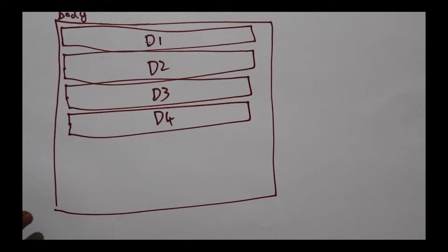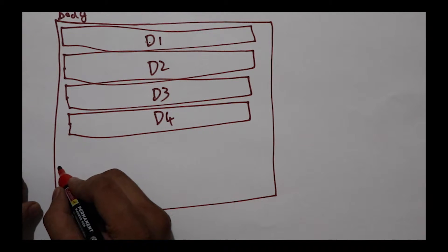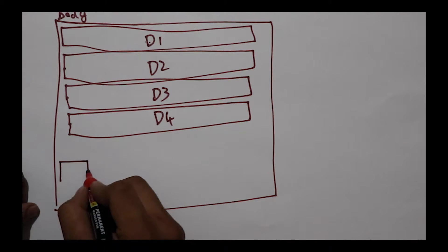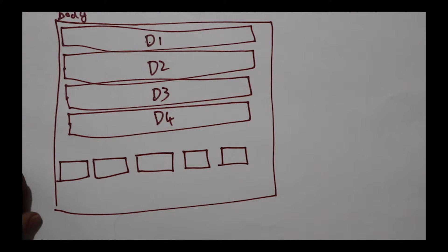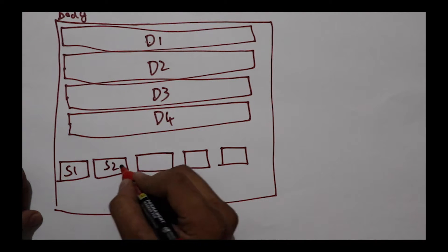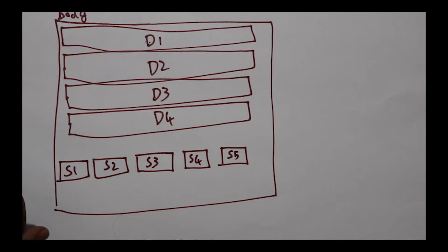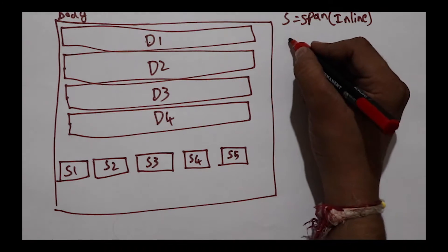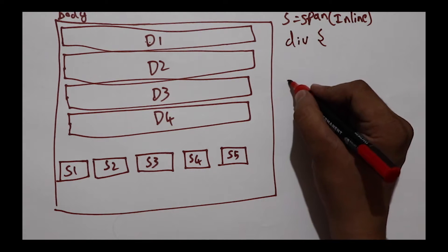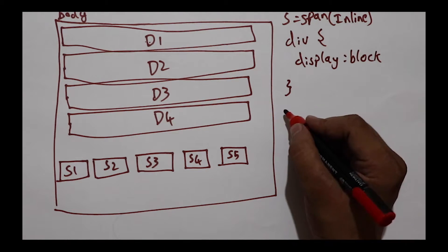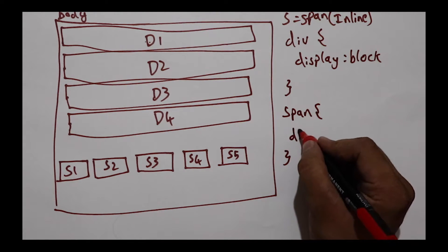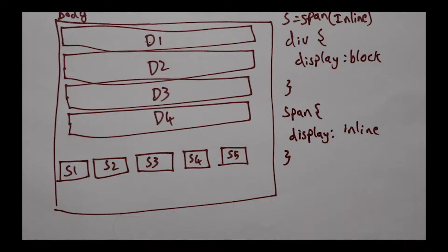If I mention five span tags in a row, they would appear like this: s1, s2, s3, s4, s5. There is a user agent style sheet available in the browser. That style sheet has a property for div that is display block, and span would have display as inline.